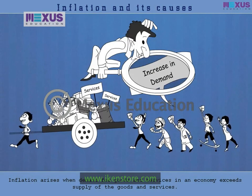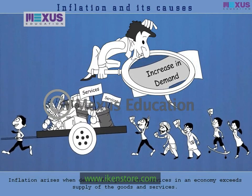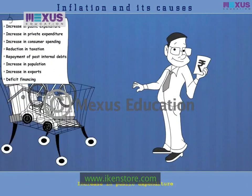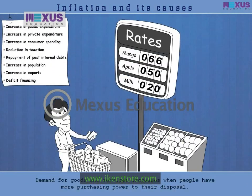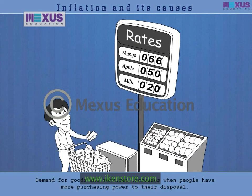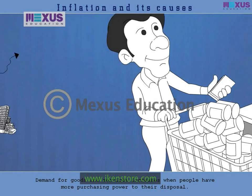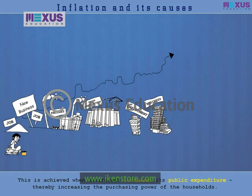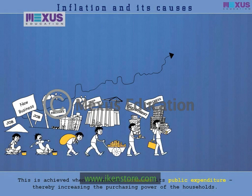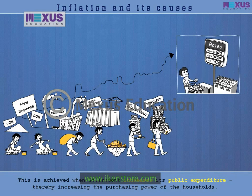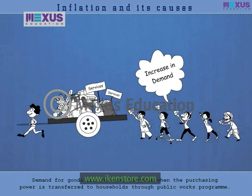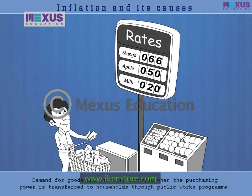Let us understand various factors which cause an increase in demand for goods and services. Increase in public expenditure: demand for goods and services increases when people have more purchasing power at their disposal. This is achieved when the government increases its public expenditure, thereby increasing the purchasing power of the households. Thus, demand for goods and services increases when purchasing power is transferred to households through public works programs.